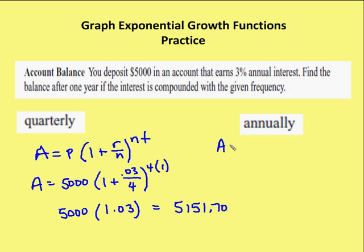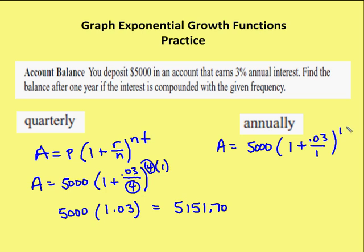If I do this annually, the principal is 5,000, and I have 1 plus 0.03 over 1. Since n equals 1, you don't really need those values, and you just rewrite the equation without requiring n. Your answer will be that value after one year.